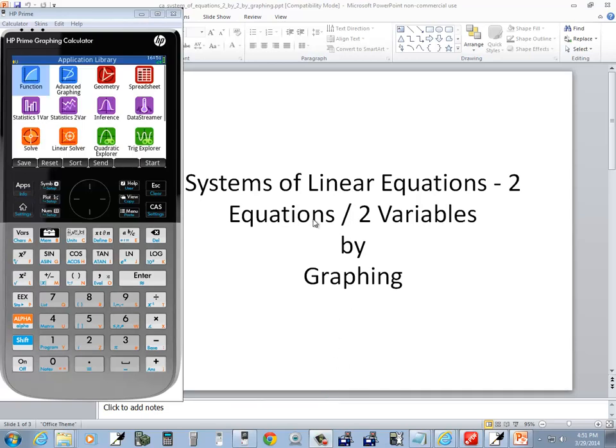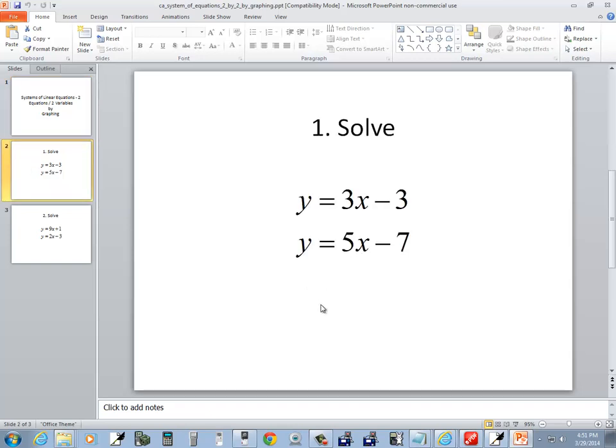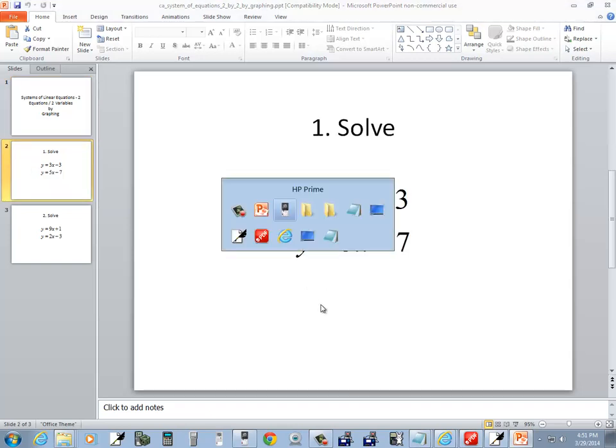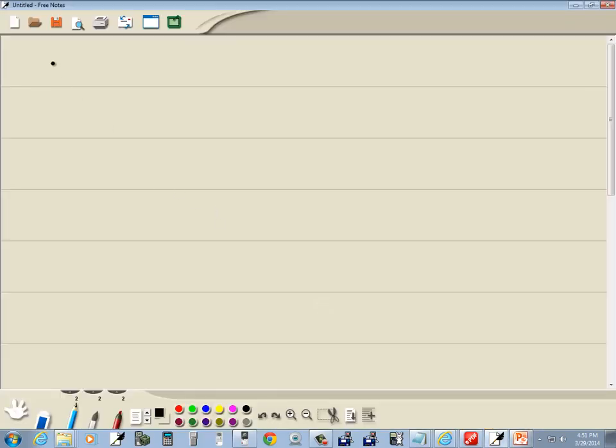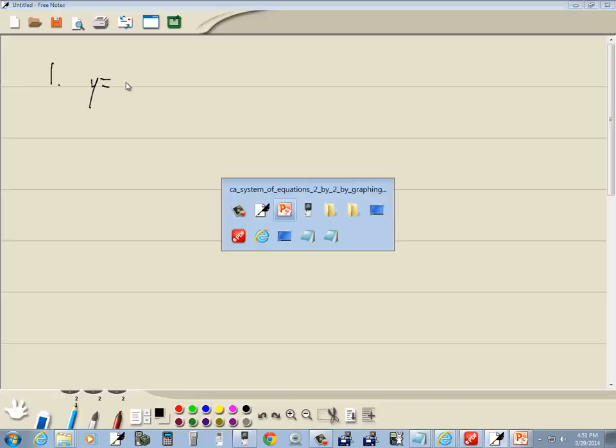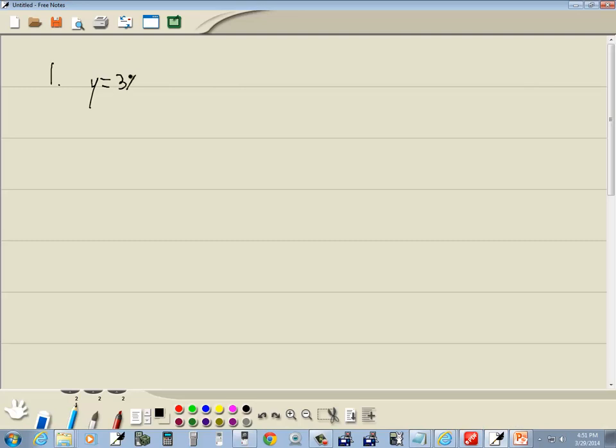Let's take a look at systems of linear equations, two equations, two variables by graphing. Let's take a look at this first problem here. We've got y equals 3x minus 3, y equals 5x minus 7.